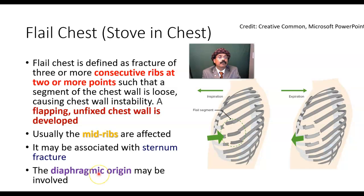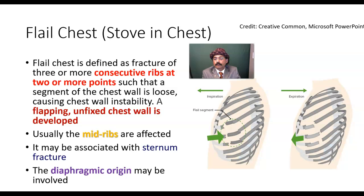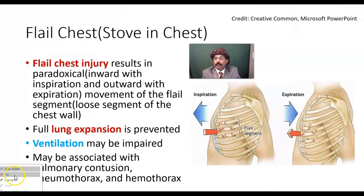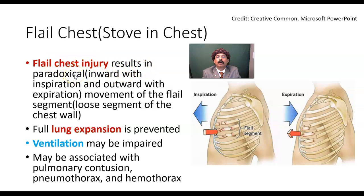The diaphragm also takes origin from the lumbar vertebra, so rib fracture may be associated with damage to the muscular origin of the diaphragm, depending on the type of injury. Flail chest injury results in paradoxical movement of the flail segment.